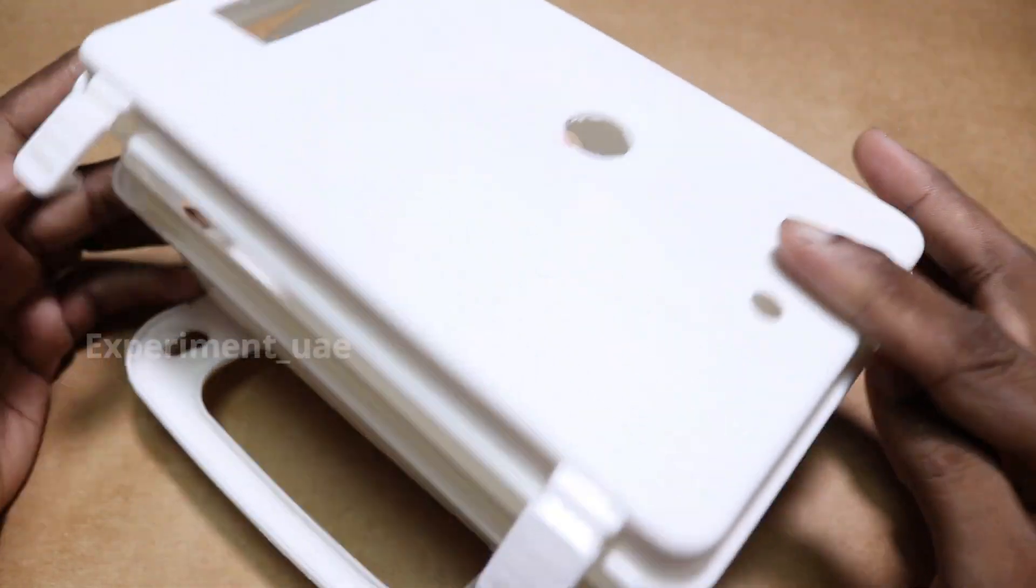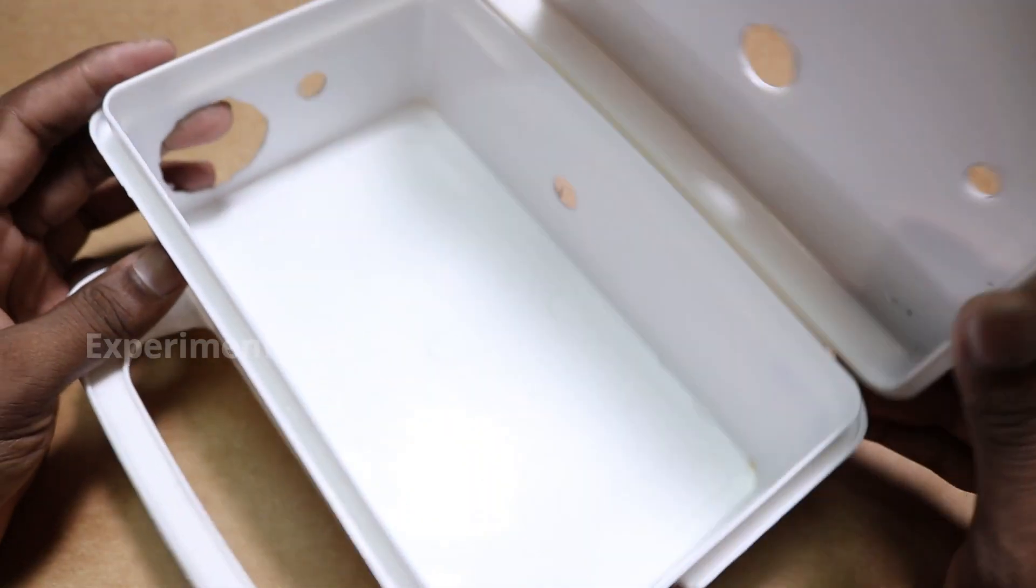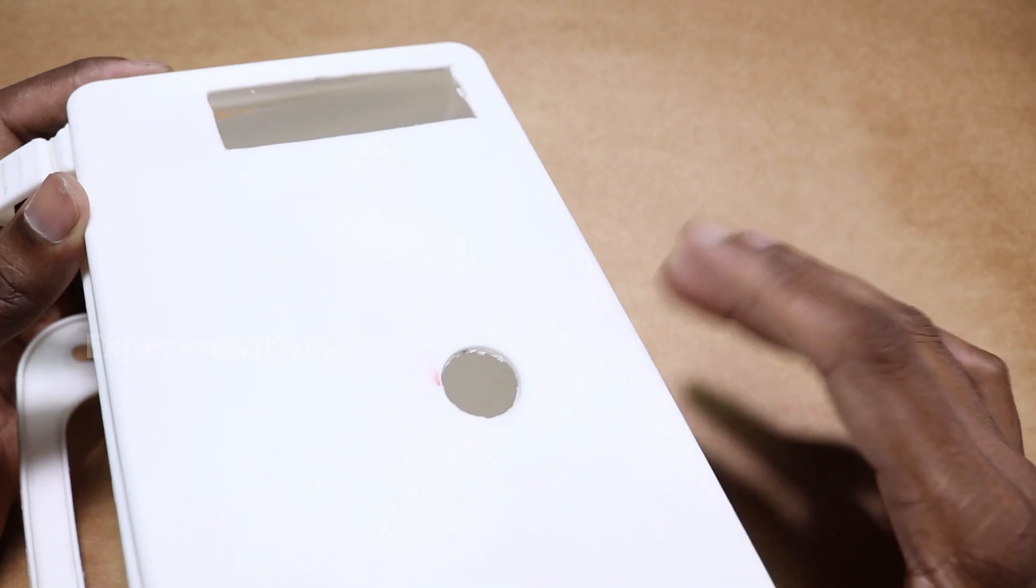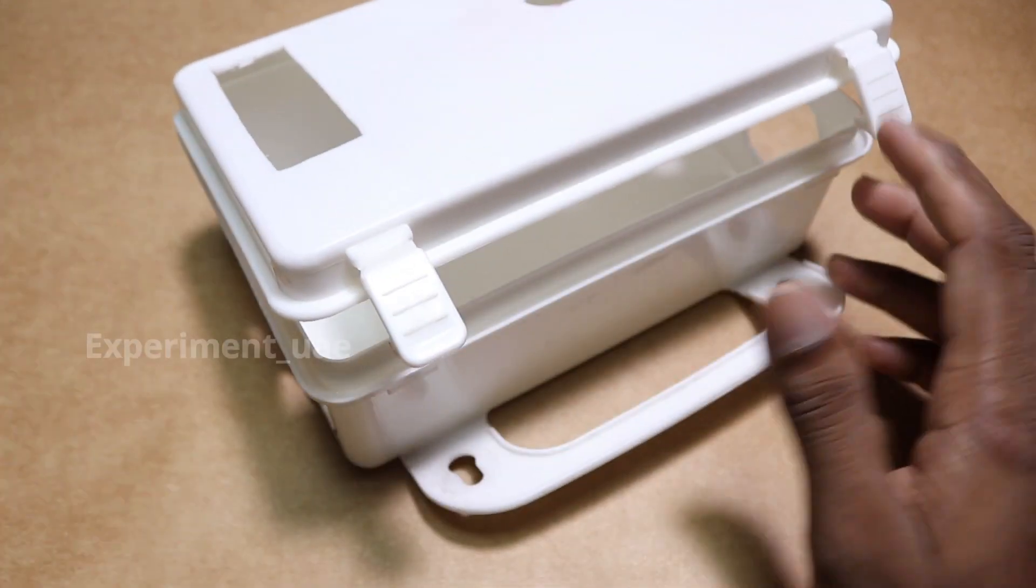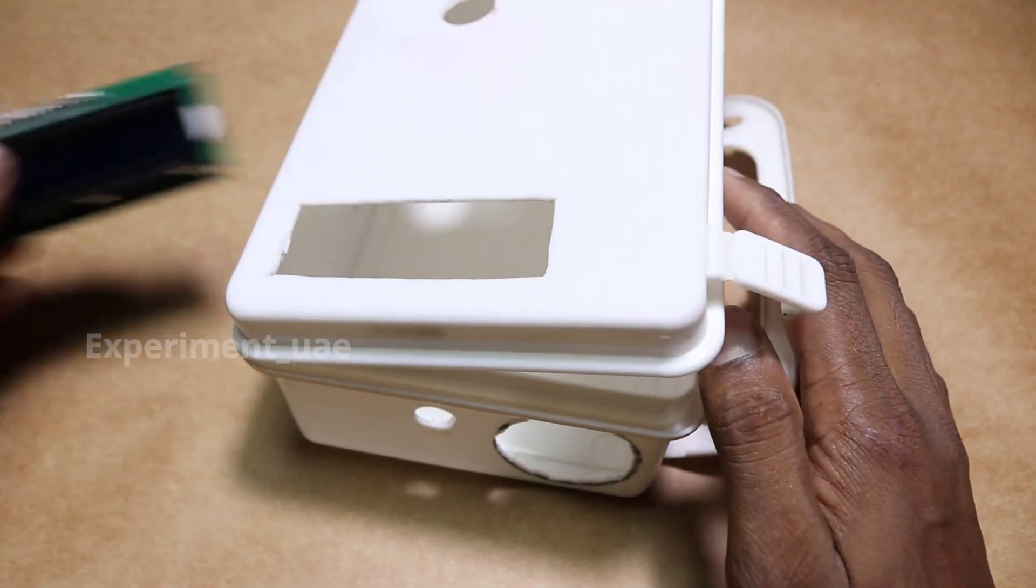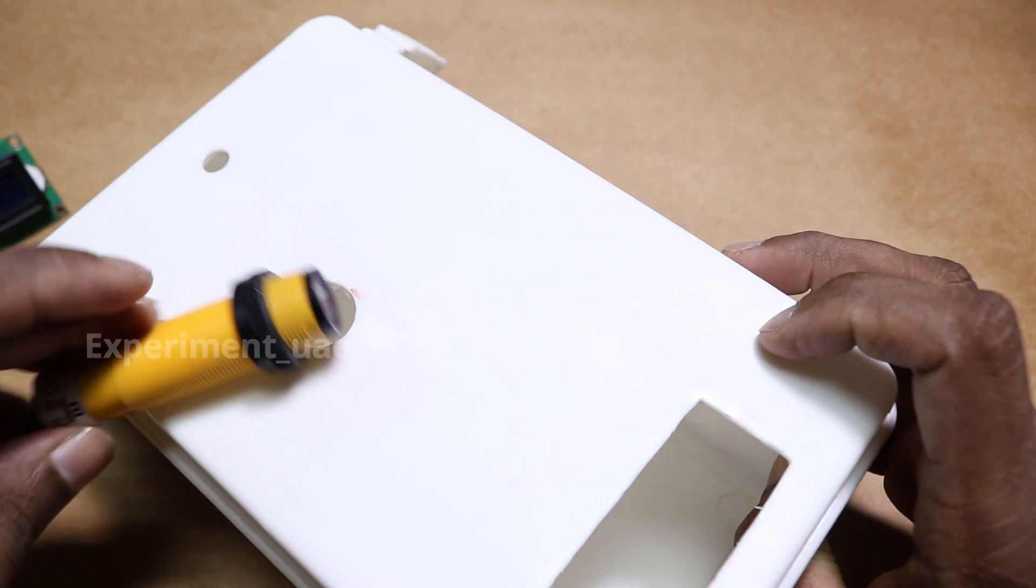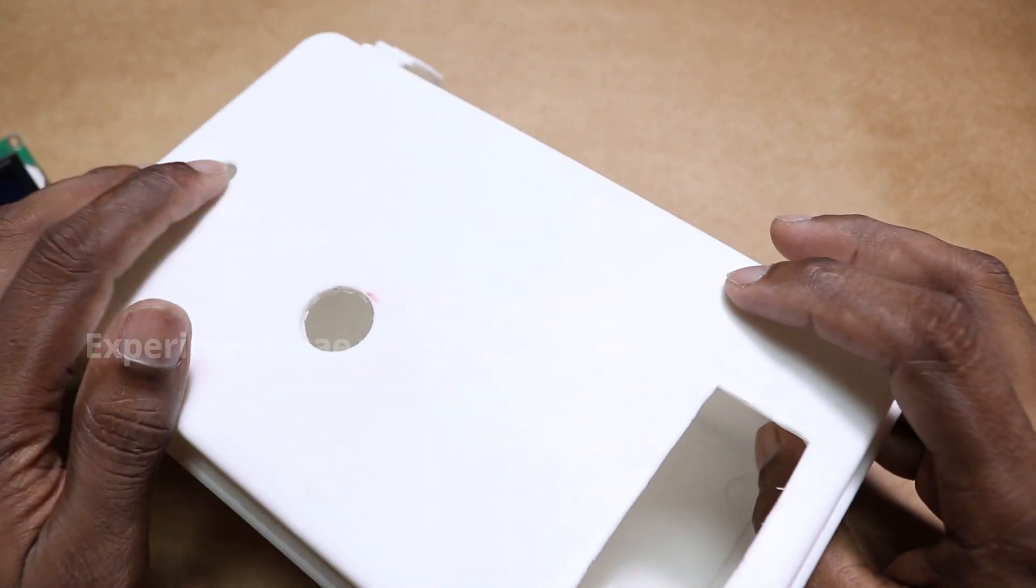This is the box we're using. Here we have the LCD display, here we have the sensor, and here we have a pipe for dispensing.